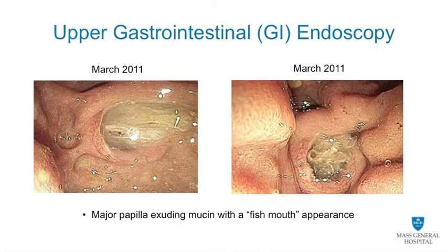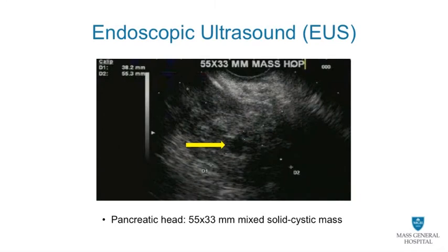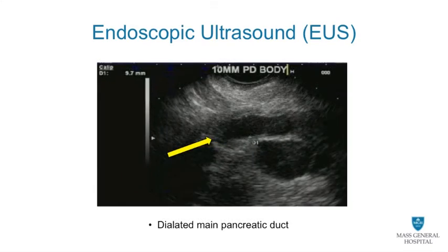Upper GI endoscopy reveals a dilated major ampulla, which is the outlet of pancreatic and bile ducts to the duodenum, with exuding thick mucin reminiscent of a fish mouth. Subsequent endoscopic ultrasound confirmed the presence of a mass in the pancreatic head showing a mixed solid and cystic appearance. The main pancreatic duct, marked by a yellow arrow, is 9.7 mm in diameter. In the normal condition it measures less than 5 mm, so this patient's pancreatic duct is significantly dilated.